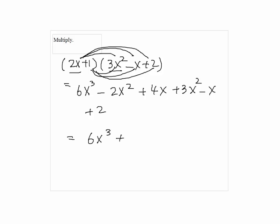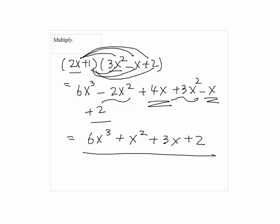By combining like terms, we have 6x cubed plus x squared plus 3x plus 2. That's all. Thank you.